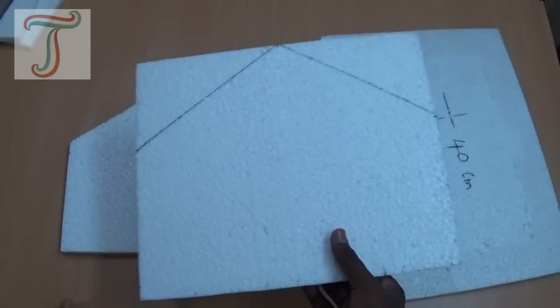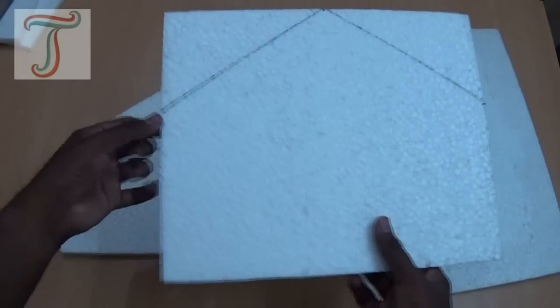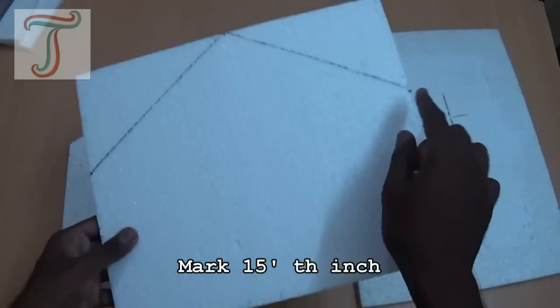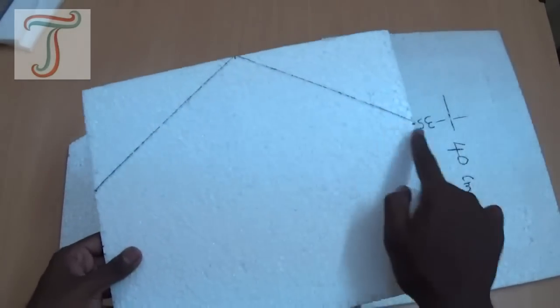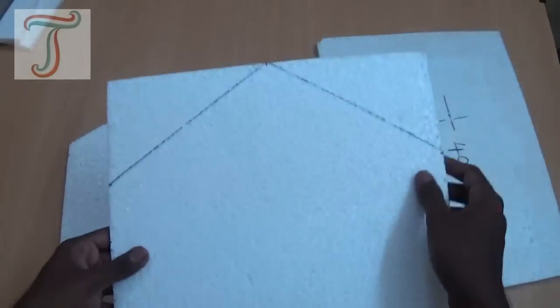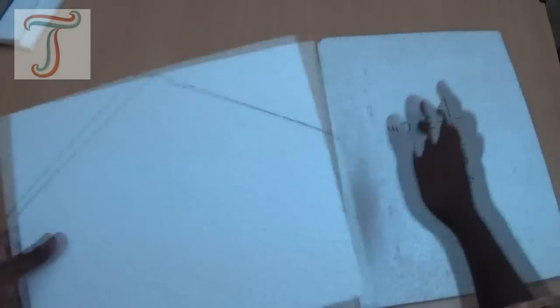Take the front and back wall piece. Then mark 15th inch, both sides. Then draw the line to the center like this. Then cut the both corners like this.